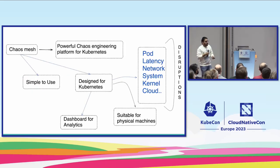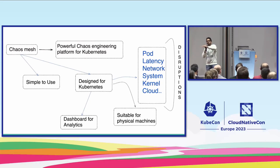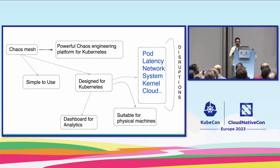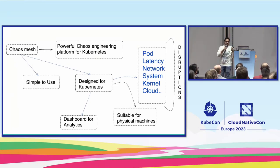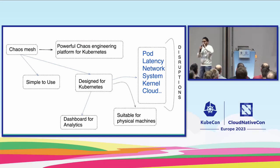Introducing chaos mesh. Chaos mesh is a tool for doing chaos engineering on Kubernetes. It also has physical chaos experiments you can do on physical nodes, and a lot of experiments you can do at the Kubernetes level. Designed for Kubernetes, you can add pod kill, increase network latency, system-level chaos, kernel-level chaos. It has deep cloud integrations with some cloud providers that allow cloud-provider-specific types of chaos. It also has a dashboard for analytics where you can view how the chaos was done.